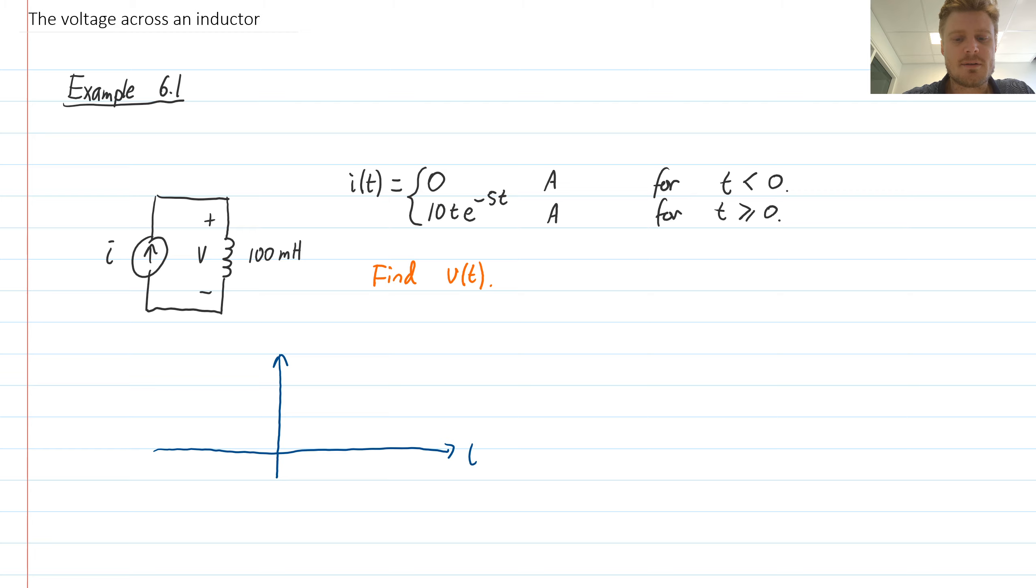If I plot current versus time, then this is the kind of curve that I'll get. The current is zero for negative times, so we go along the horizontal axis here. Then as soon as we reach t equals zero, the second part of our expression kicks in. I can substitute t equals zero in here and I'll get zero, so it's still continuous.